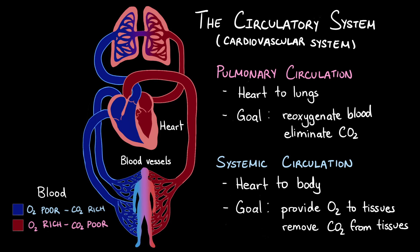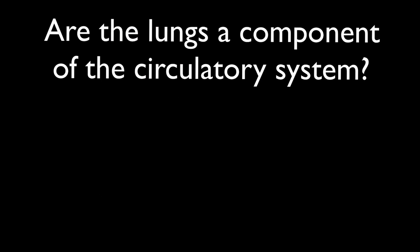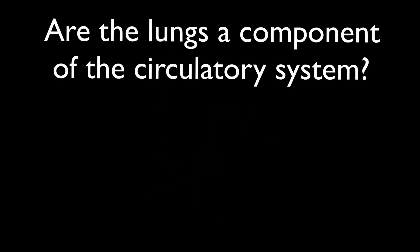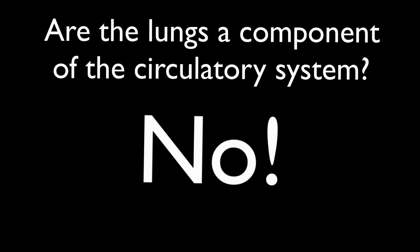Are the lungs a component of the circulatory system? The answer is no — the lungs are not a component of the circulatory system. Although the lungs play a very important role in gas exchange and interact with the circulatory system, the lungs are actually a part of the respiratory system. The components of the circulatory system are the heart, the blood vessels, and the blood.